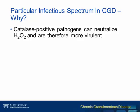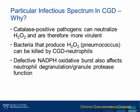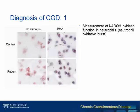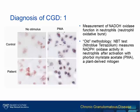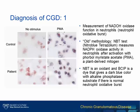Defective function of the NADPH oxidase complex affects neutrophil degranulation and granule enzyme function. The laboratory diagnosis of CGD has traditionally involved the nitro blue tetrazoleum (NBT) test, which is useful for measuring NADPH oxidase function in neutrophils. The NBT test is considered an outdated test at present, but it measures NADPH oxidase activity in neutrophils after activation with PMA, which is a plant-derived mitogen. NBT is an oxidant, and the dye gives a dark blue colour if there is normal neutrophil oxidative burst.